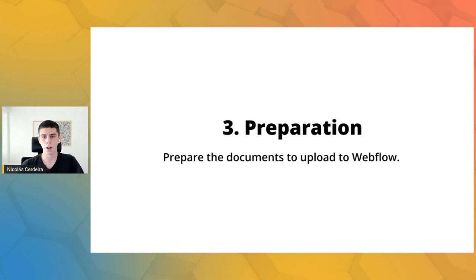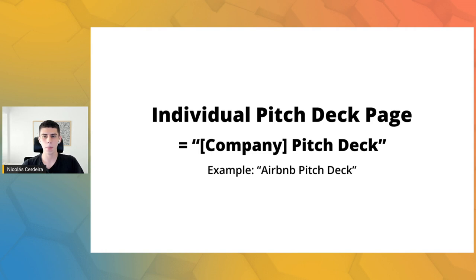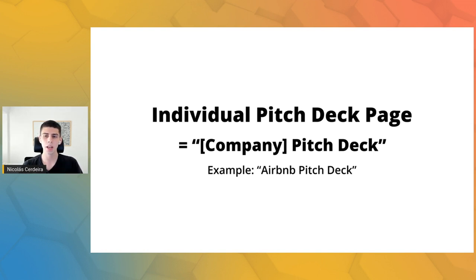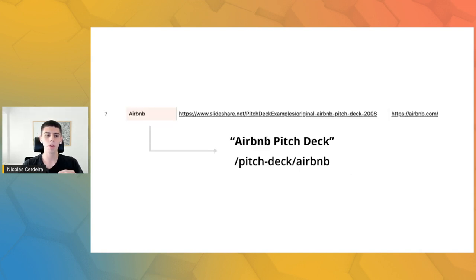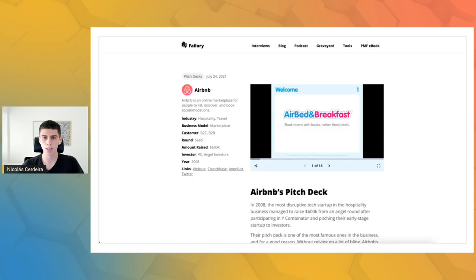The third step was preparation. Before being able to programmatically create the listicle articles of pitch decks for different industries, business models, customer types, and stages, we needed to do some more preparation work. Let me first talk about the content type 'company pitch deck.' Each of the rows in the table was one startup and its pitch deck, and each of these rows had to have a specific page about it on Failory — I will call these pages individual pitch deck pages. For example, the row containing information about Airbnb and its pitch deck will be turned into a page focused on ranking for the keyword 'Airbnb pitch deck.'